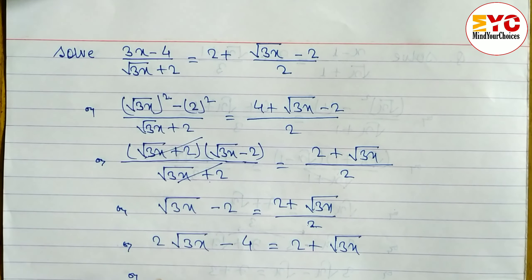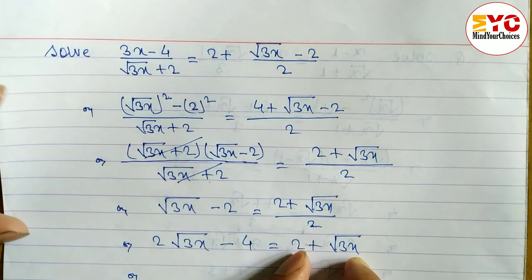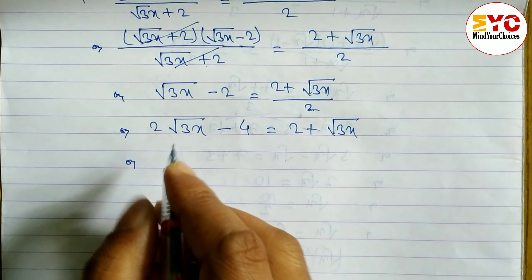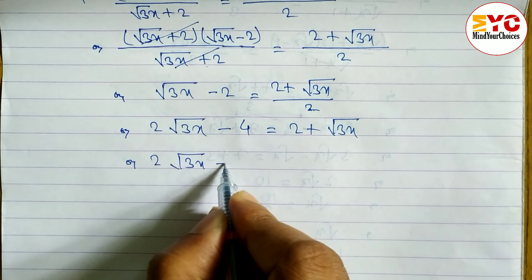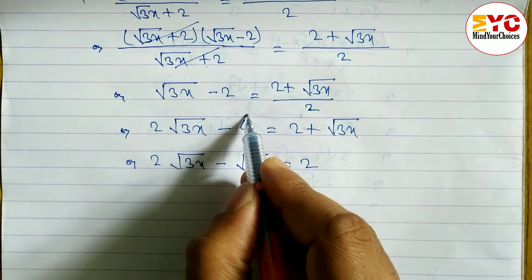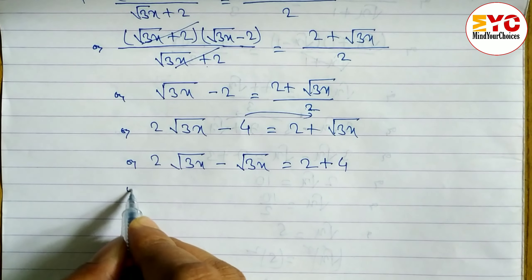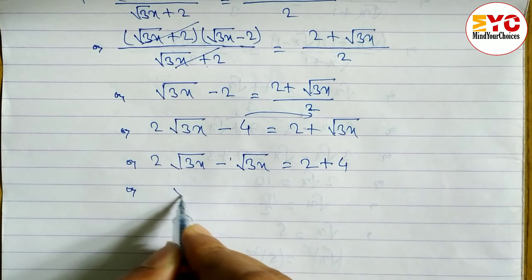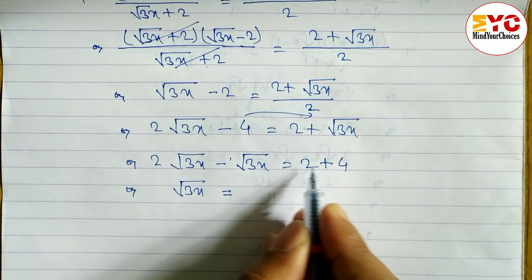We arrange like terms together. Since √(3x) terms cannot be added to plain numbers, we group them: 2√(3x) minus √(3x) on the left. Moving 4 to the right side changes its sign to plus 4. So 2 minus 1 gives 1, meaning √(3x) = 4 + 2 = 6.